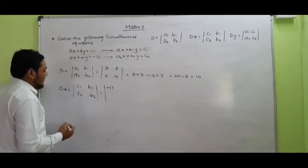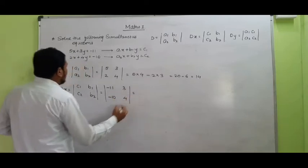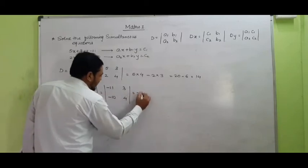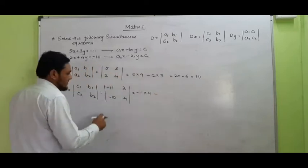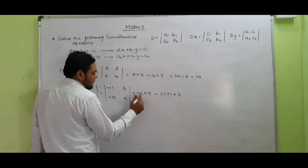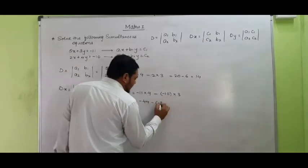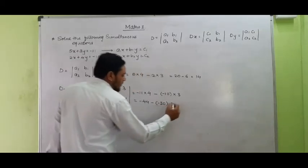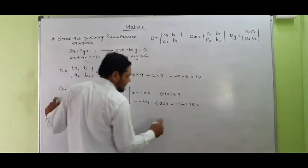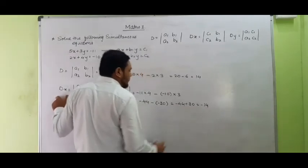C1 is minus 11, so we will write minus 11. C2 is minus 10, so we write minus 10. B1 is 3 and B2 is 4. Now: negative 11 multiplied by 4 minus minus 10 multiplied by 3 gives minus 44. Then minus and minus becomes positive, giving positive 30. So the value of DX is 30 minus 44, which is minus 14.